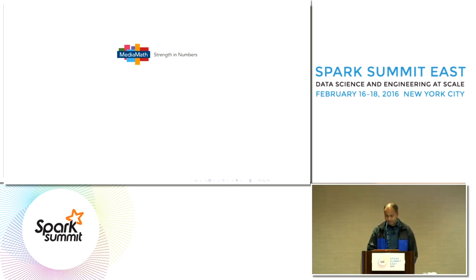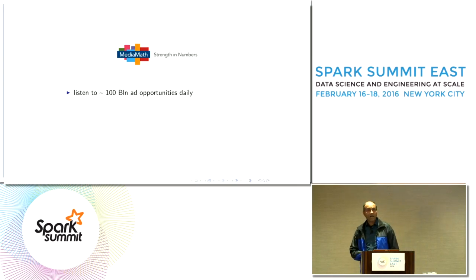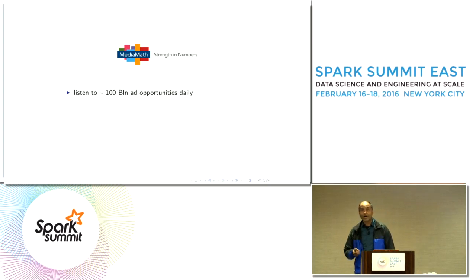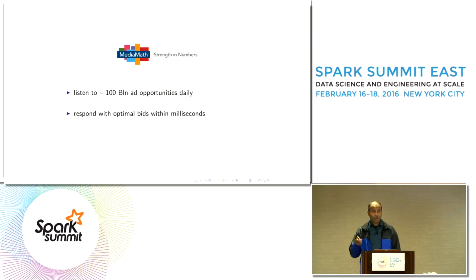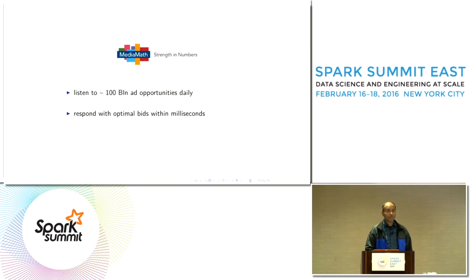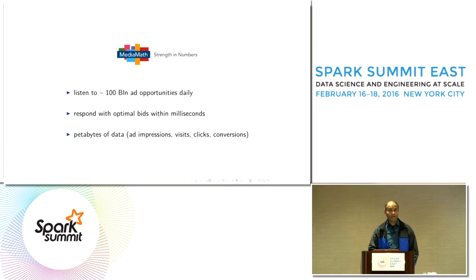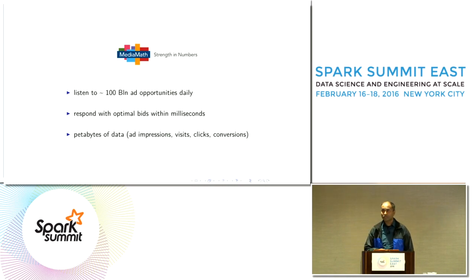What that entails is we listen to a hundred billion ad opportunities every day coming in from the exchanges — opportunities to serve ads. In response to each incoming ad opportunity, we have to make extremely fast decisions. Within milliseconds, we have to decide whether to bid, which opportunities to bid on, and if we do decide to bid, how much to bid optimally. In order to make optimal bidding decisions, we have to process petabytes of data across the entire spectrum of user activity, including page visits, clicks, conversions, and ad impressions.